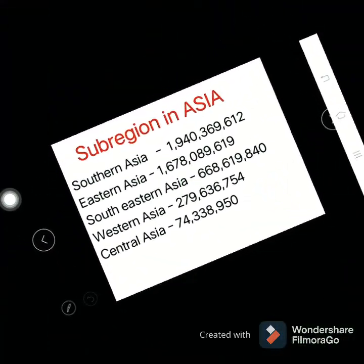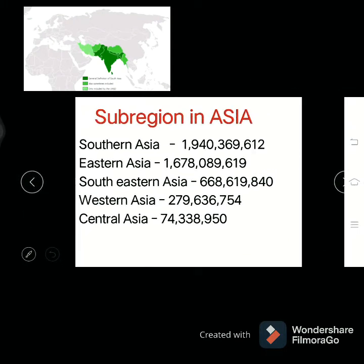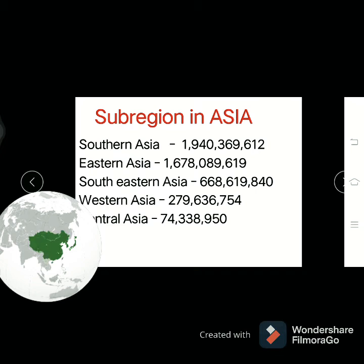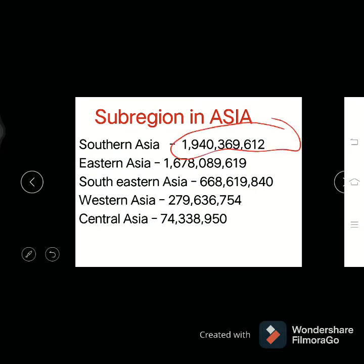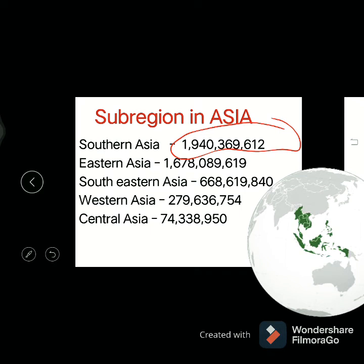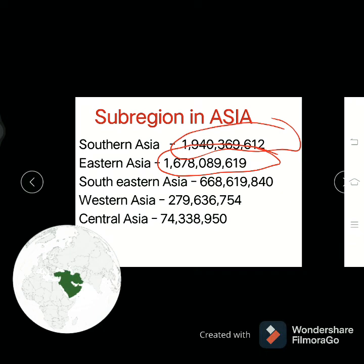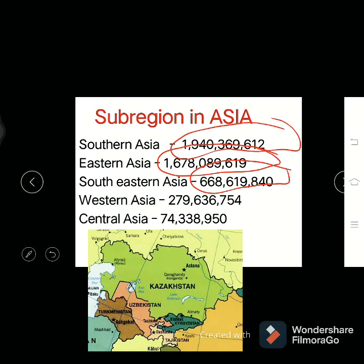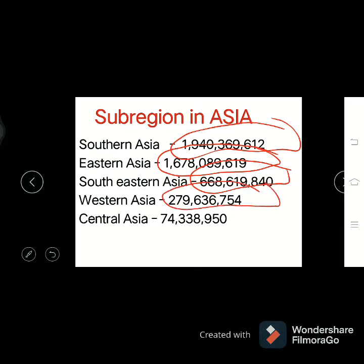Let's proceed to the sub-regions of Asia. Asia has five sub-regions. First is Southern Asia with a population of 1,040,369,612. Next is Eastern Asia with approximately 1,040,690,000. Then Southeastern Asia with 668,690,840. The fourth is Western Asia with 279,614,000. And lastly, Central Asia with 74,238,000.